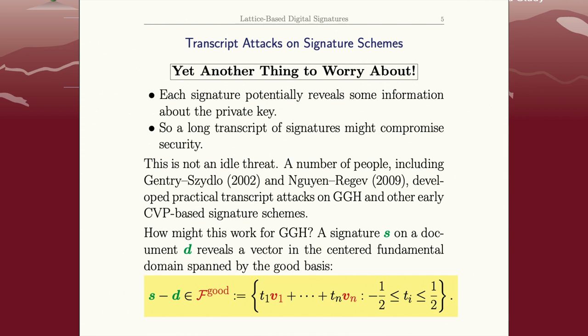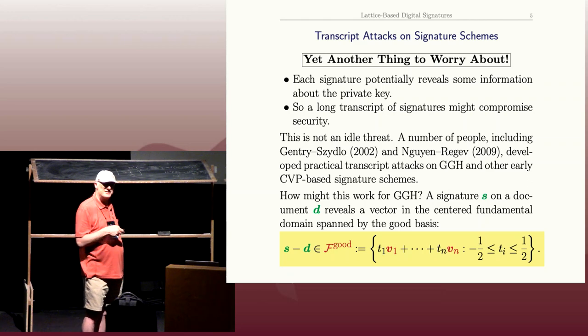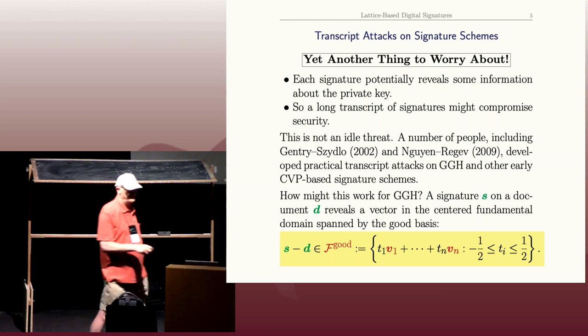Of course Eve the attacker doesn't know the V's and she doesn't know the T's, but she does know S minus D. If you take lots and lots of random vectors that look like this for lots and lots of random T's, they all lie in a fundamental parallel piped, well shifted, so it's centered at the origin. Think about that: every signature tells Eve the information, here's a vector in a parallel piped that's spanned by Alice's private key. So that's some useful information potentially.